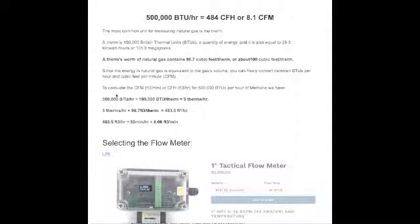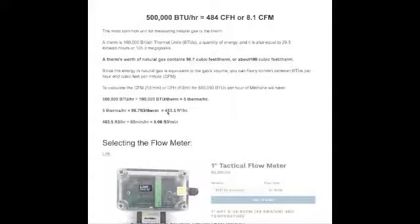Let's get to the main calculation. 500,000 BTUs per hour divided by 100,000 BTU per therm equals 5 therms per hour. 5 therms per hour times 96.7 cubic feet per therm equals 483.5 cubic feet per hour.